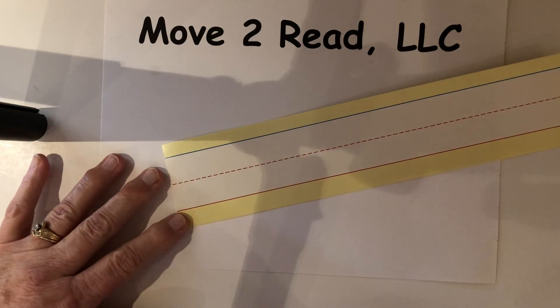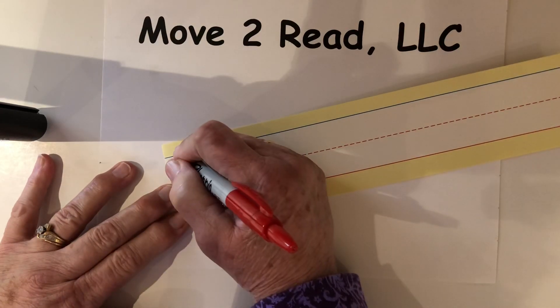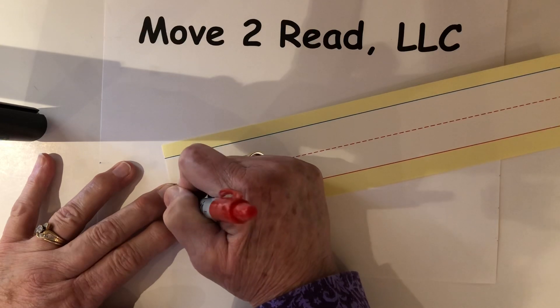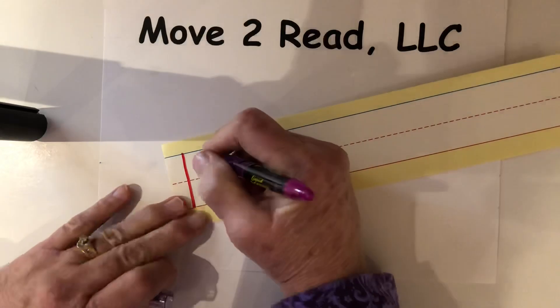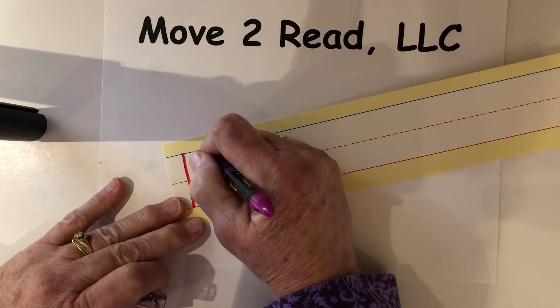Okay, now we're going to practice the letter H. We're going to start in the sky, fall to the ground, then we are going to frog hop back up here again.